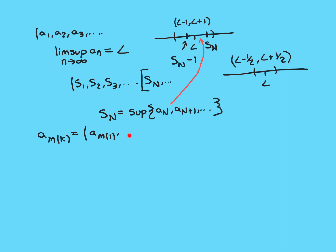For my second term of the subsequence, I consider a smaller interval around L: L minus 1/2 to L plus 1/2 — we've halved the size of the interval. We'll continue doing this. When we go to the third term, we get a smaller interval again. Rather than halving each time, I'll use an interval of radius 1/K for simplicity. So the next one would be radius 1/3, then radius 1/4. As long as the intervals are getting progressively smaller and converging to being indefinitely small, our subsequence is guaranteed to converge to L.